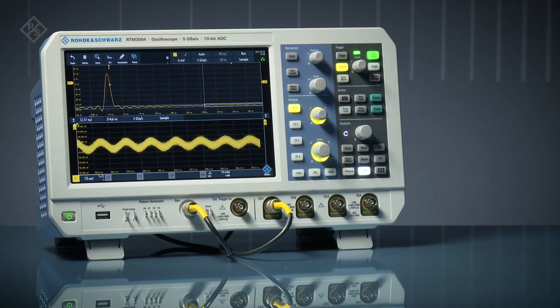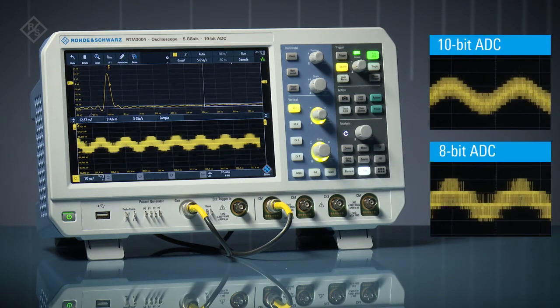If we artificially change the ADC resolution to 8-bits, ADC steps are clearly visible. Signal detail smaller than the ADC steps is lost. A side-by-side comparison shows the value of 10-bit resolution.